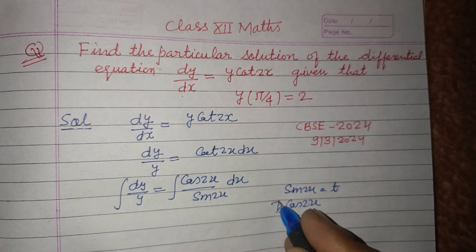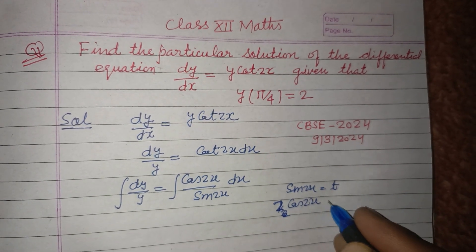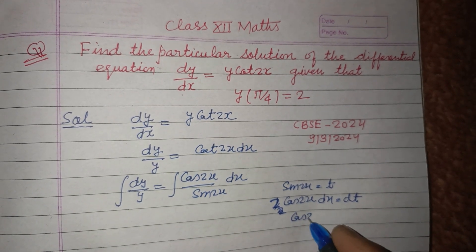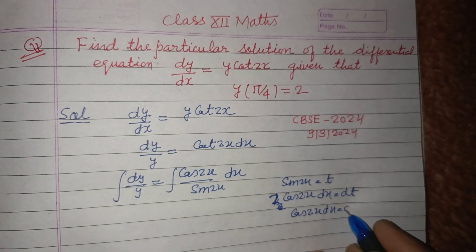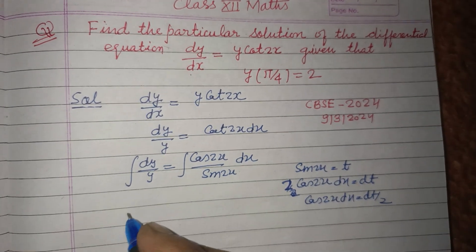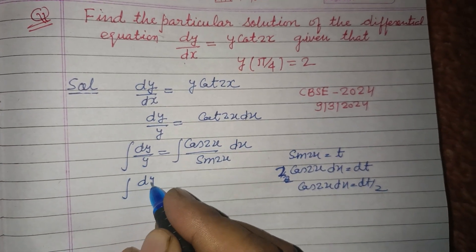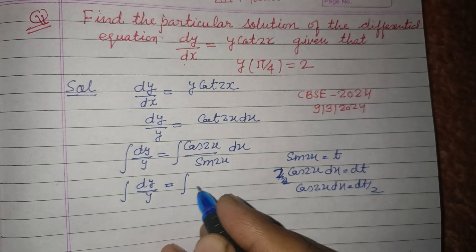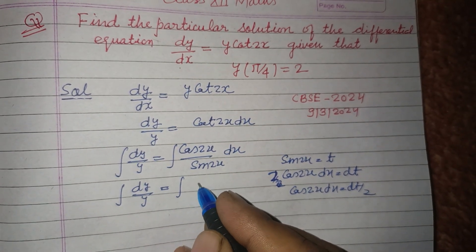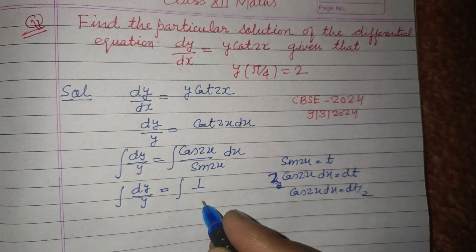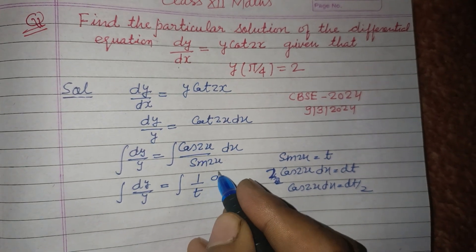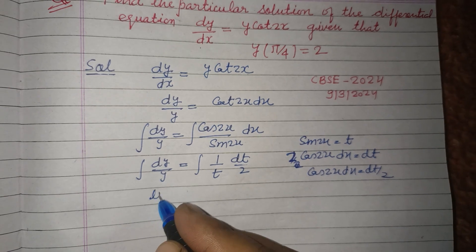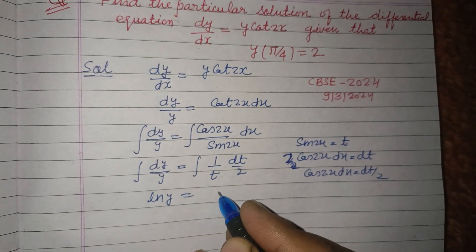Therefore cos 2x dx equal to dt/2. So we have integral dy/y equal to integral 1 upon t dt by 2. So this is ln y equal to 1/2 ln t plus c.